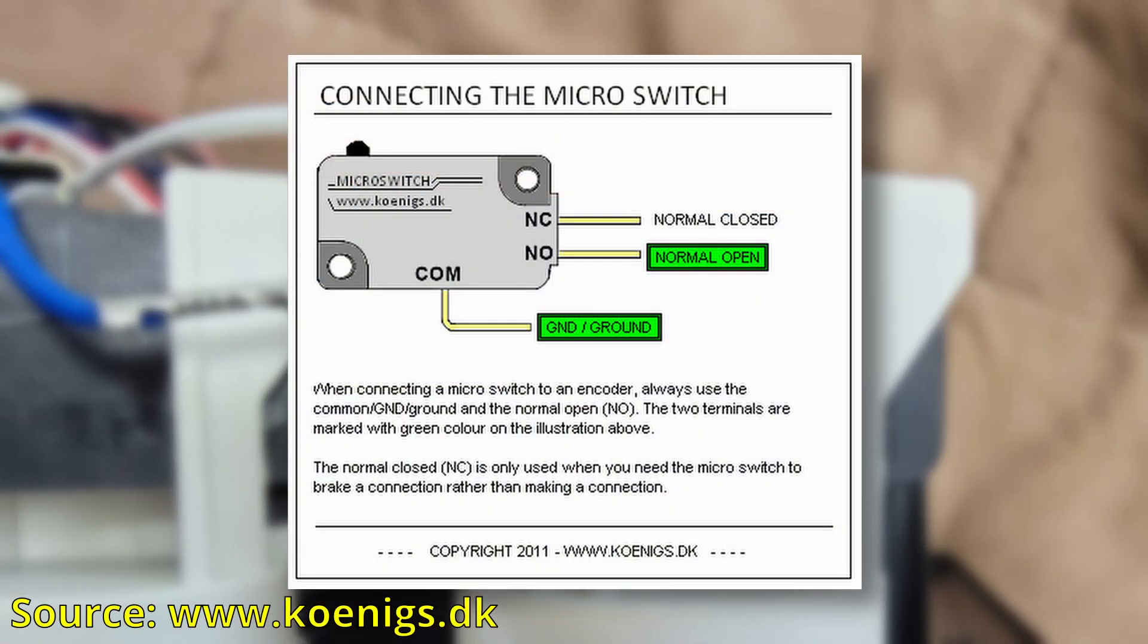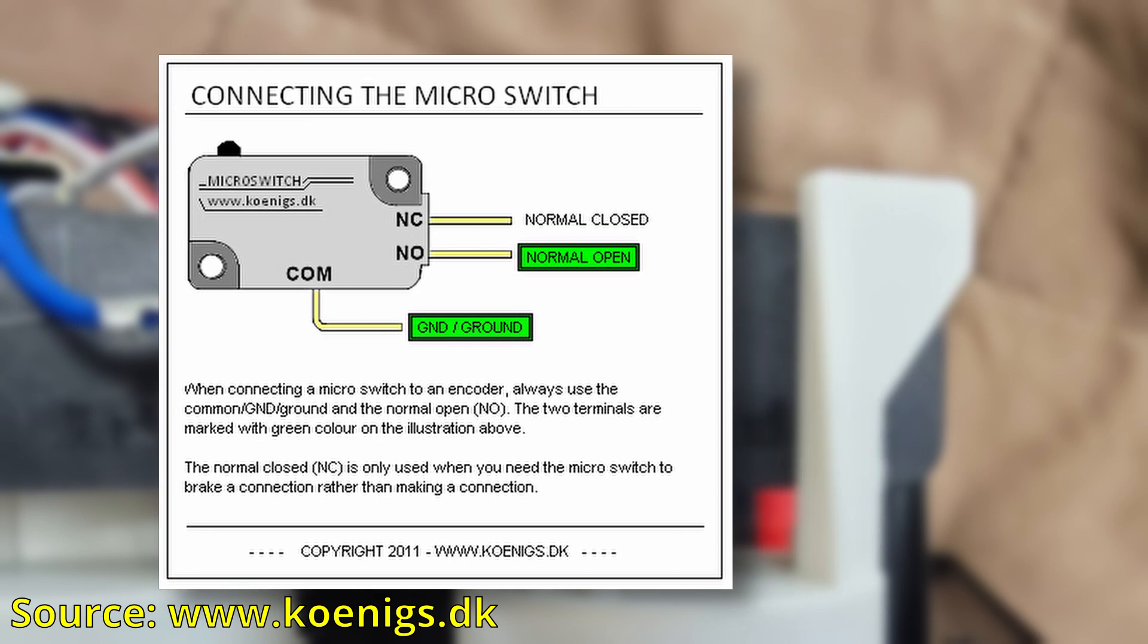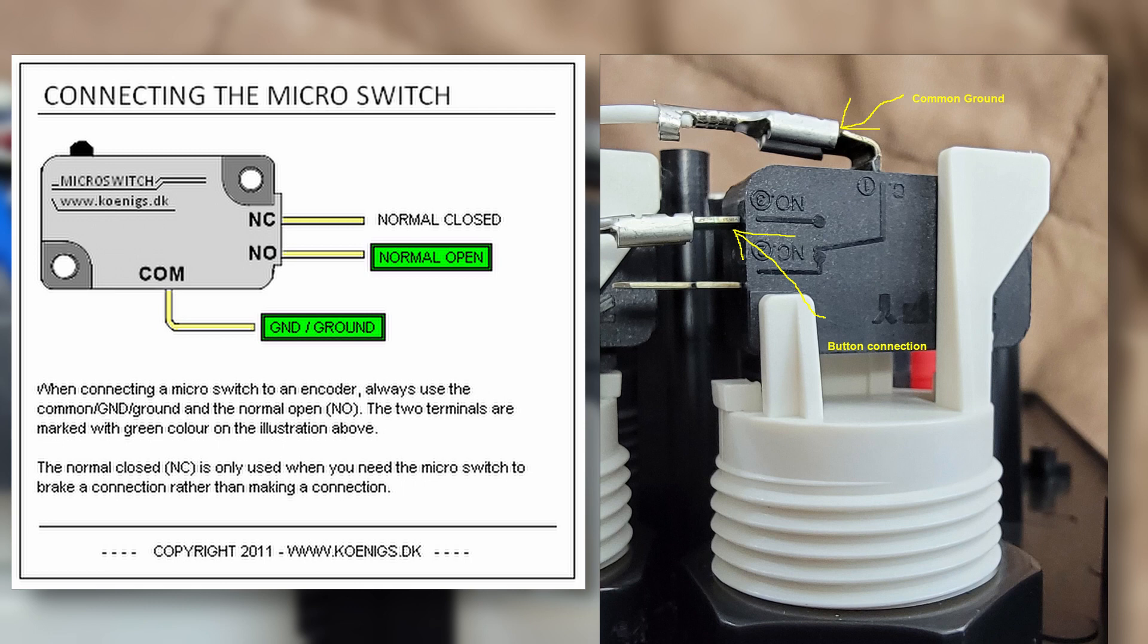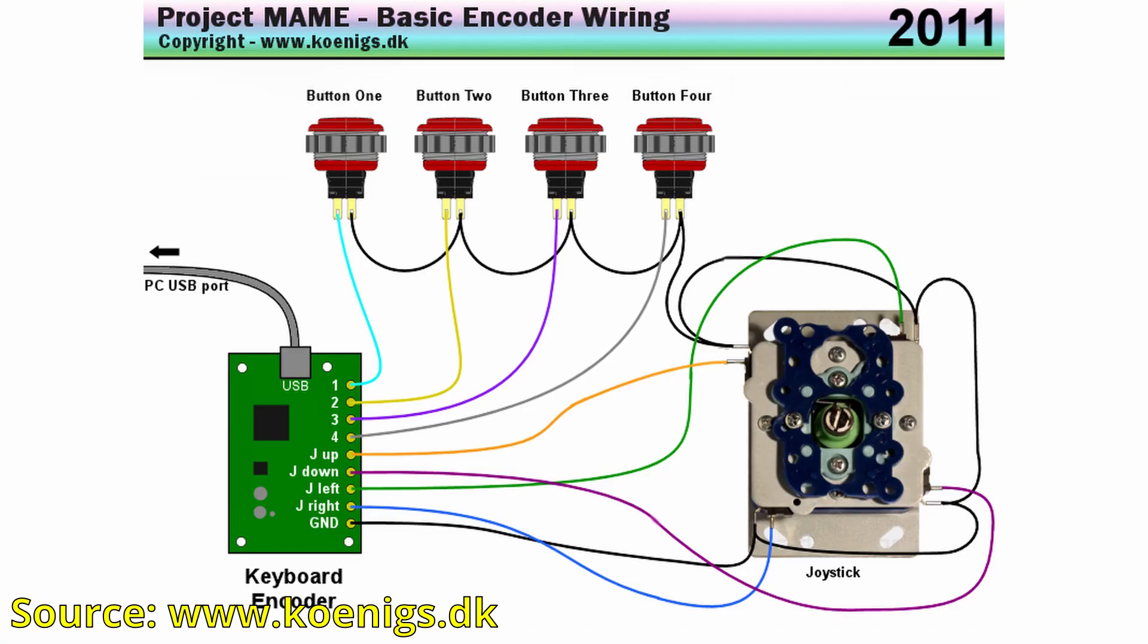I obtained a really good image to define this for me from Koenigs.dk. It tells me that the connector labeled C is the common ground connector. The connector labeled NO, meaning normally open, is what's used for the button action. The website also had a wiring diagram that helped me visualize just how things needed to be wired.